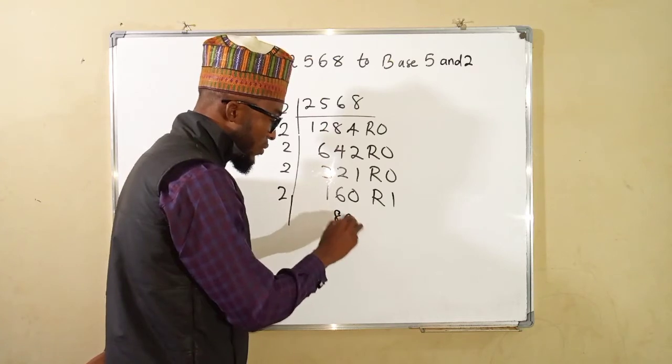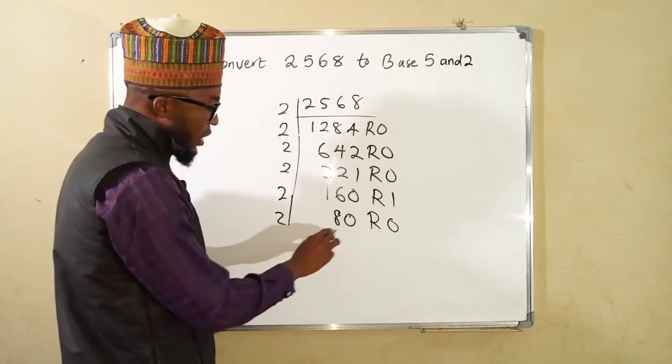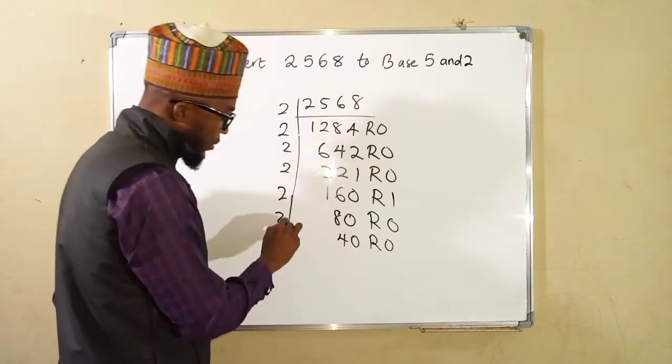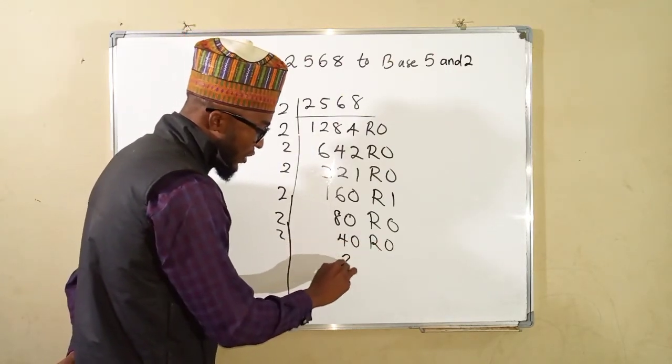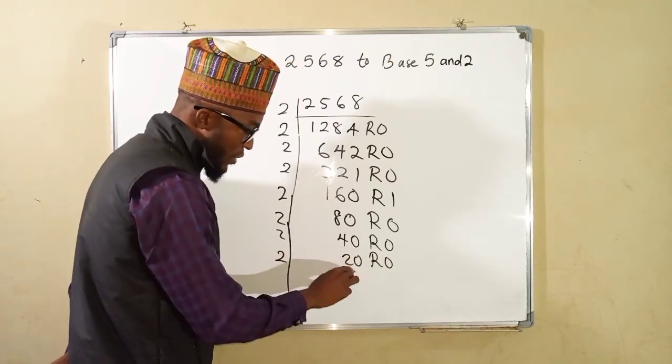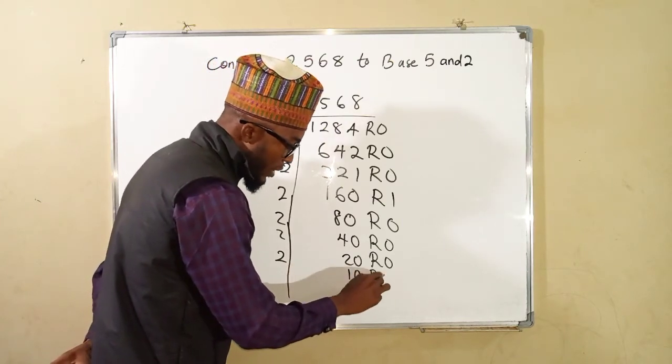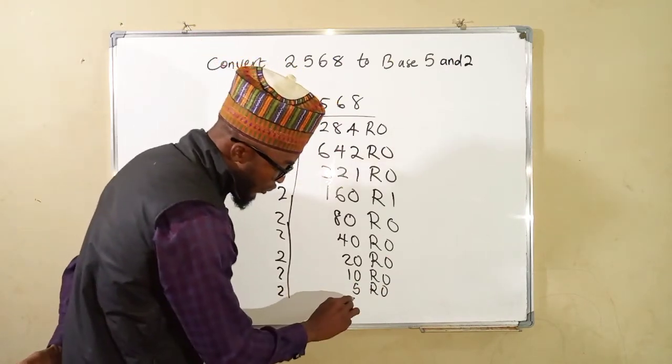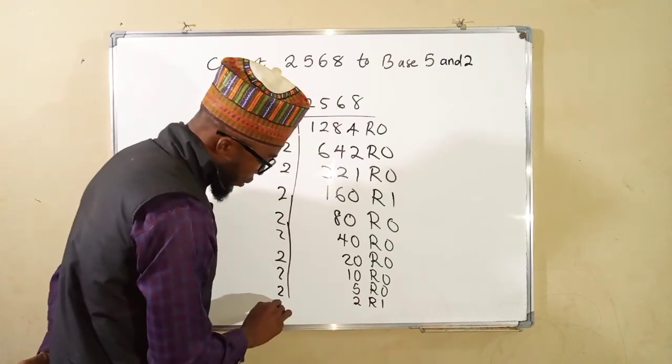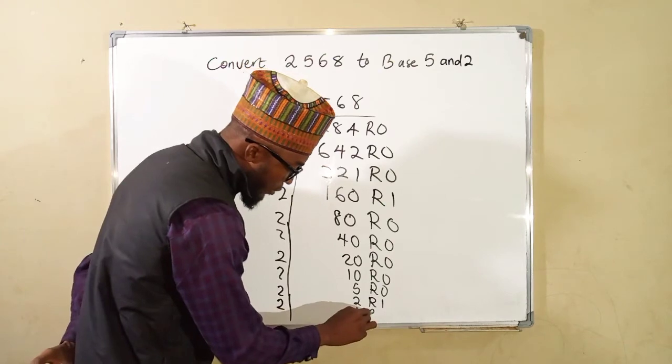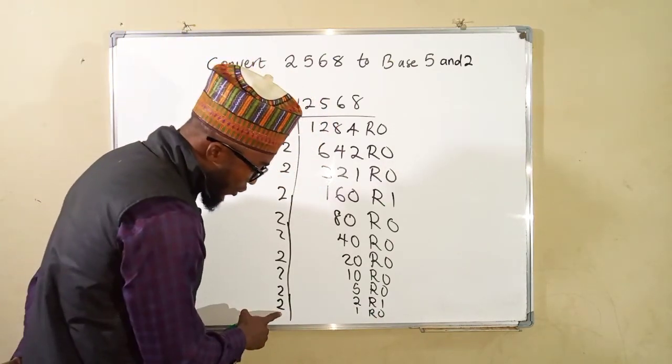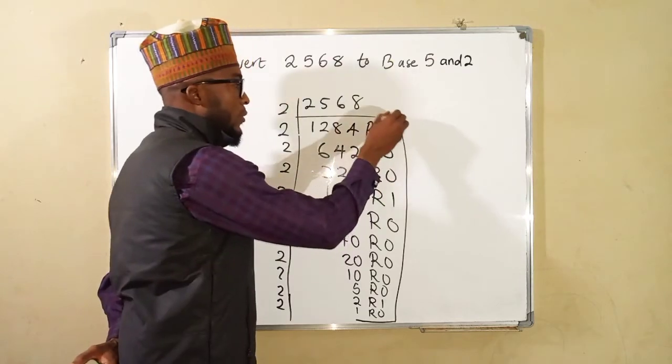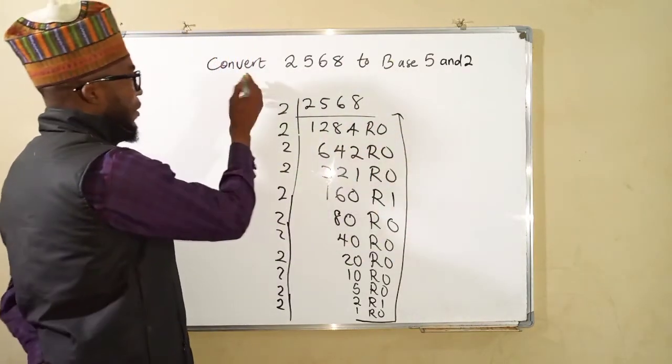2 into 0 is 0, we do not have a remainder. 2 here we have 2 into 8 is 4, here we have 0, no remainder. We keep on going, 2 here we have 20 no remainder, 2 here we have 10 no remainder, 2 here we have 5 no remainder, 2 here we have 2 but we have a remainder of 1, 2 into 2 is 1 no remainder. 0 and finally 2 cannot go into 1 therefore we stop and take these numbers in this form. So where are we going to write them, let me write them here.